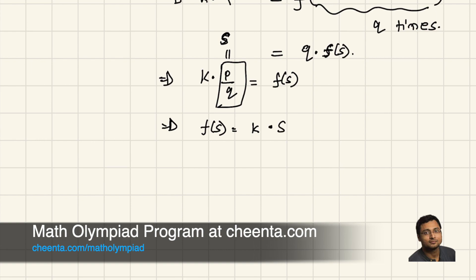So, f(S) turns out to be some constant number times S. This is exactly what we found in the case of integers. In the case of integers, f(P) is equals to constant times P. Now, we found the same thing for rational numbers. f(S) is equals to constant times S.